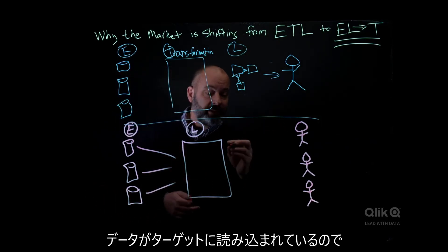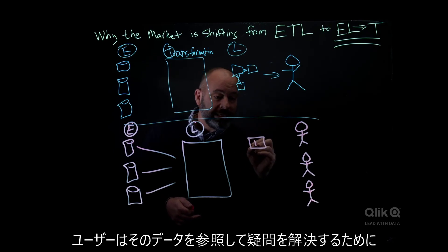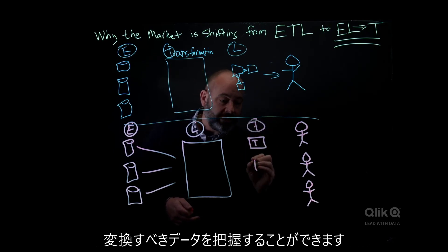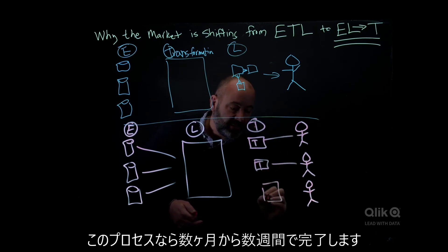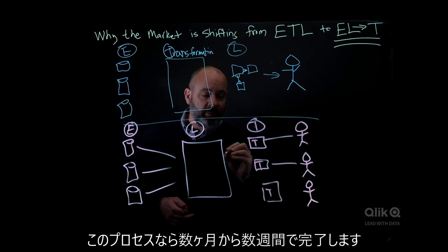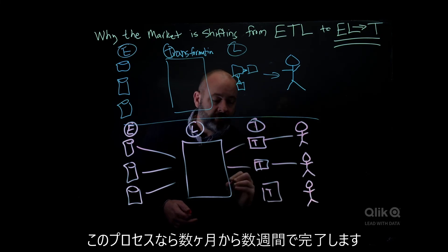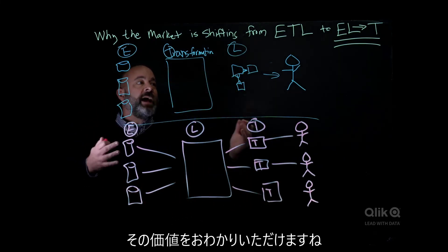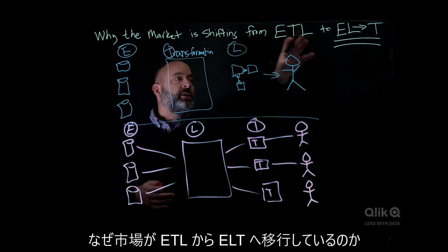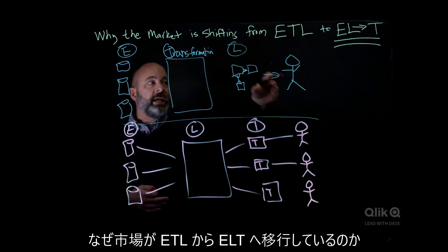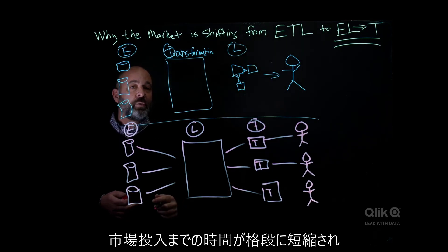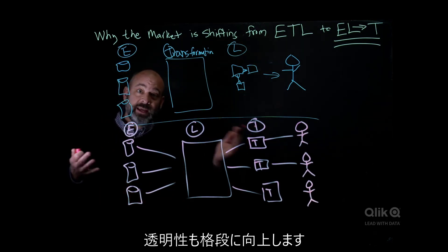That load process is a very quick process. Now that the data is in there, consumers can actually look at that data and understand what they need to transform to get their questions answered. This process goes from months and months to weeks. You can see the value of why the market is shifting from ETL to ELT. The time to market is much quicker, and the transparency is much higher. Thank you.